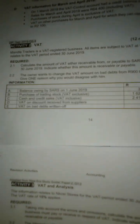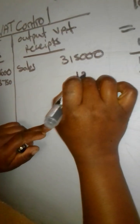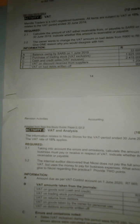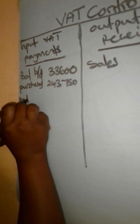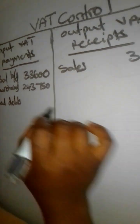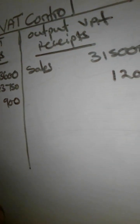Next we have VAT on discount received — since it is received, we record it on the output VAT side, which is the credit side, for 1,200. Then we have VAT on bad debts written off. The business is losing here, so it is part of payments and goes on the debit side. The amount is 900.